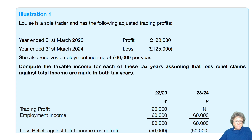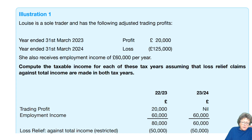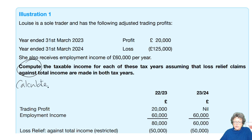We have a question for Louise. She's a sole trader with adjusted profits. Year ended 23 March, she had a profit and then a massive loss in 24 — something went drastically wrong. She's got £60,000 worth of employment income each year. We are to compute — remember that means to calculate — the taxable income for each of these years, assuming loss relief claims against total income are made in both years. They're basically telling you what to do in this situation.